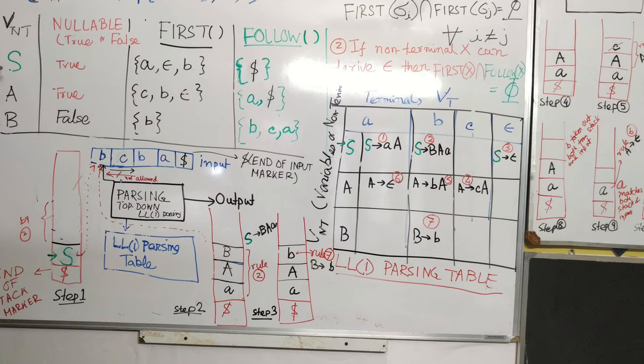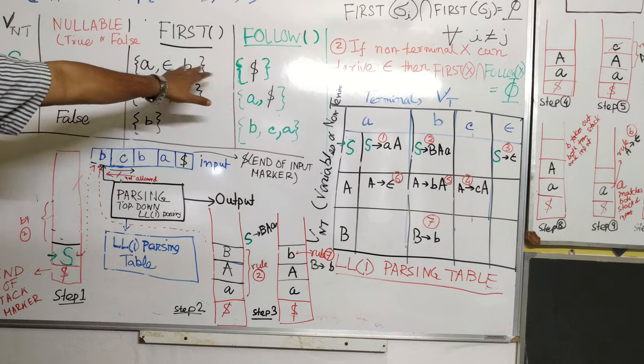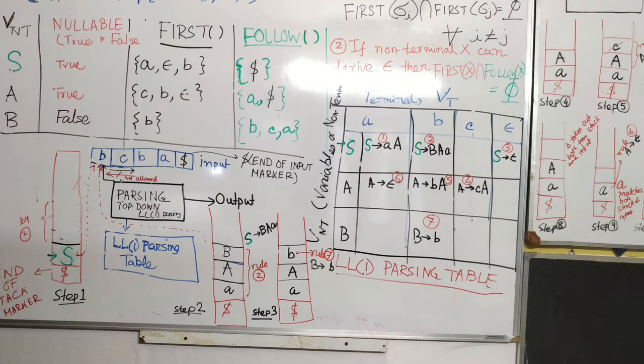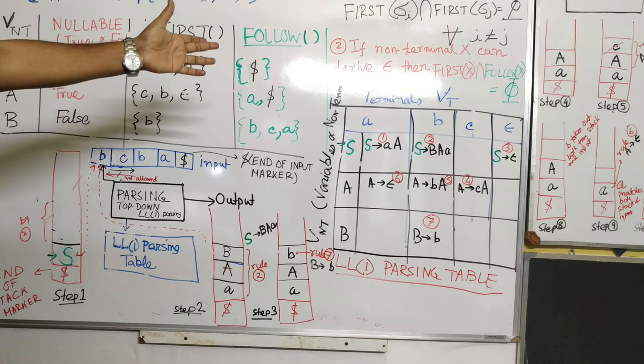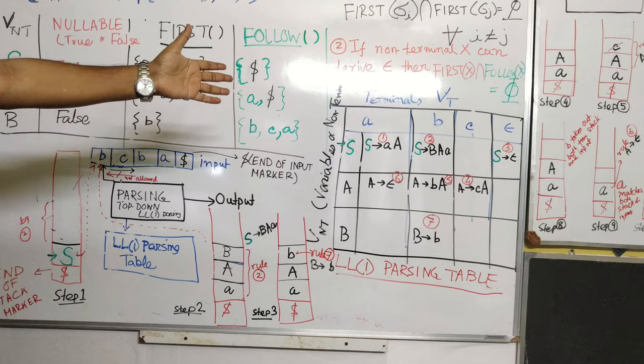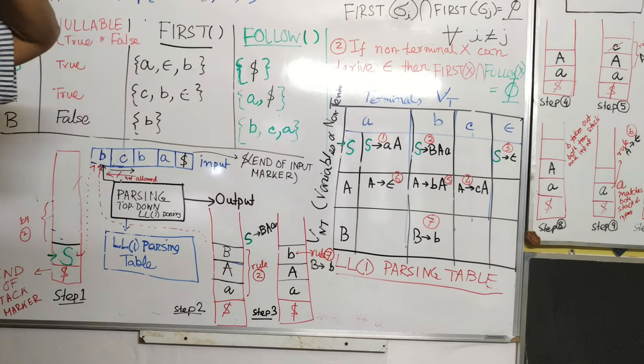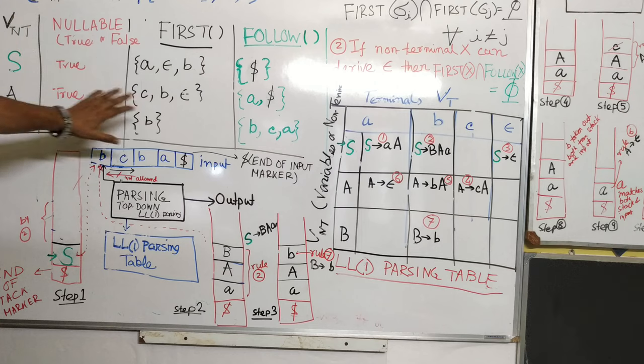We check which variables can go to epsilon. We can see the rule, then by rule number three, ace goes to epsilon, so it is true. Then first we have calculated and follow we have calculated, there is no common. So we know for the LL(1) grammar, the rule number two, that is if non-terminal x can be derived epsilon, we check whether first of x and follow of x should be disjoint, so it is satisfied.